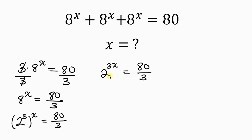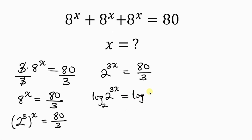Now since the base on the left-hand side is 2, we take the log base 2 of both sides. So I'll take the log base 2 of 2 to the 3x. This is equal to — we do the same thing to the right — we have the log of 80 over 3, base 2.